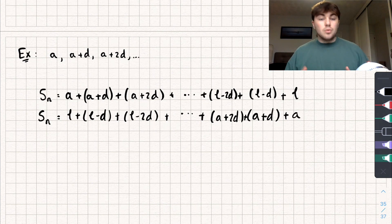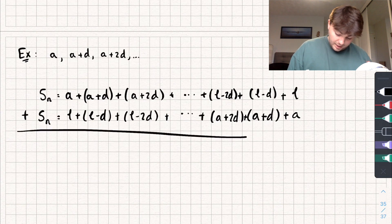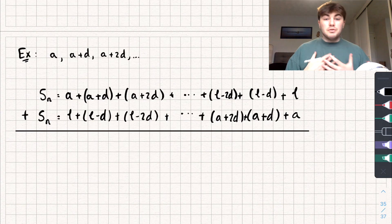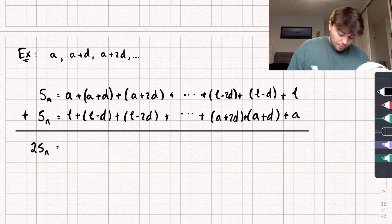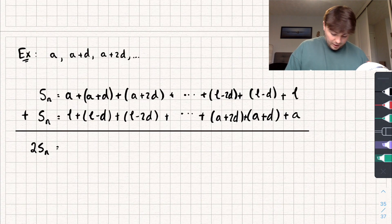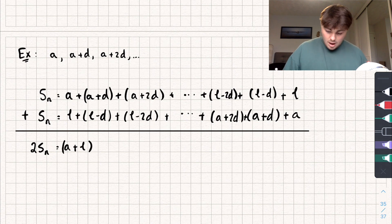Now from here, I'm just going to add these two things together. So we're adding them together, and if we do that, we're obviously now going to have two times S_N. Two times the sum of both of the series, and let's see what's going to happen. Well, firstly, we're going to get A plus L. That's pretty obvious. We've got A plus L.